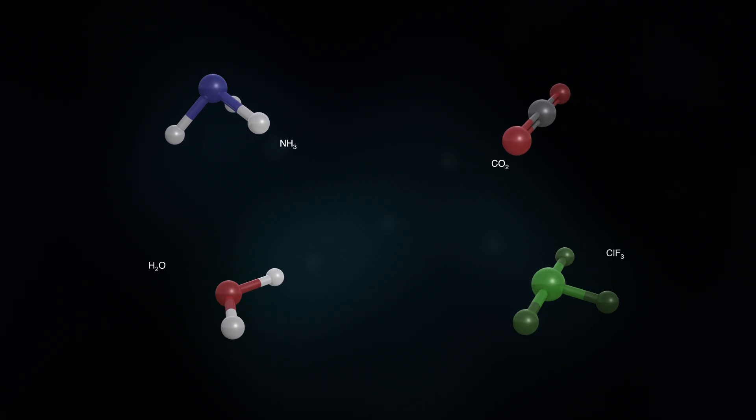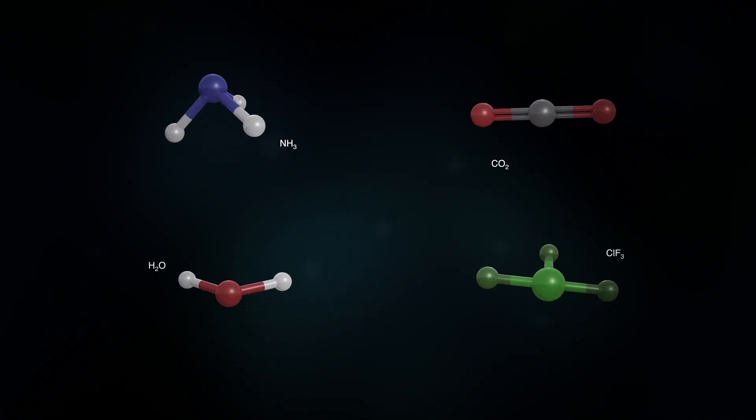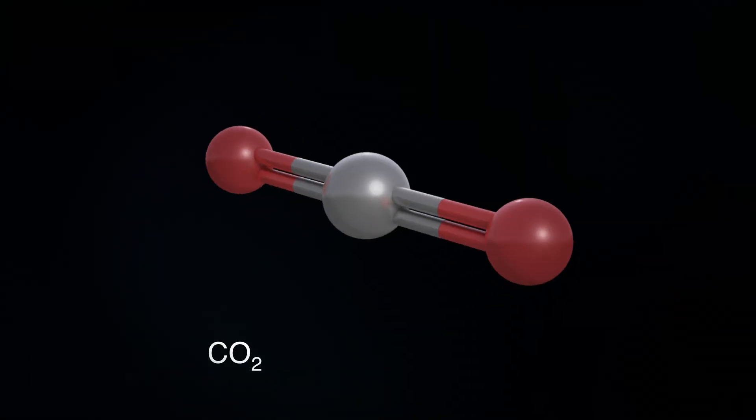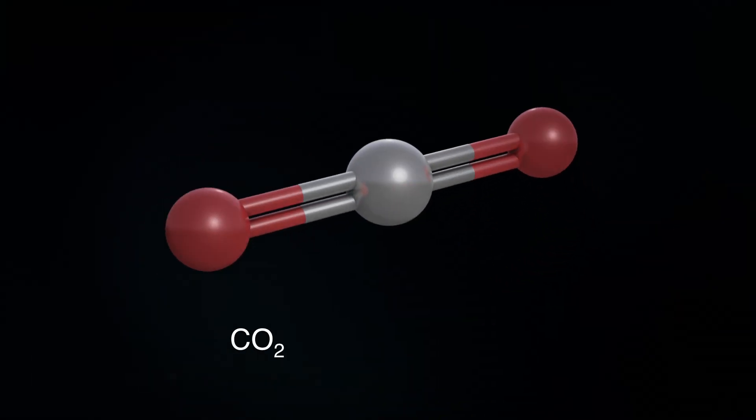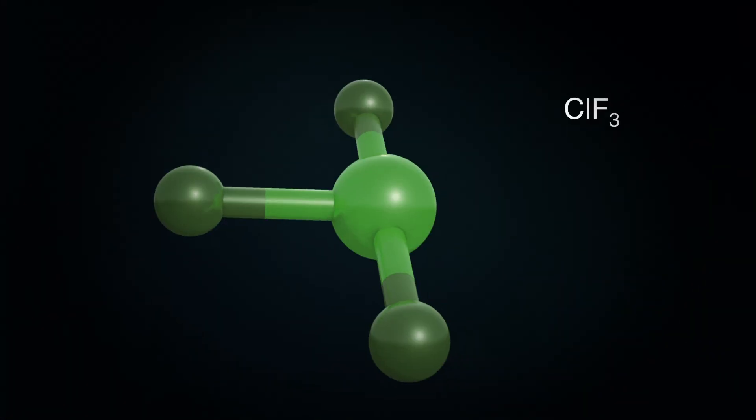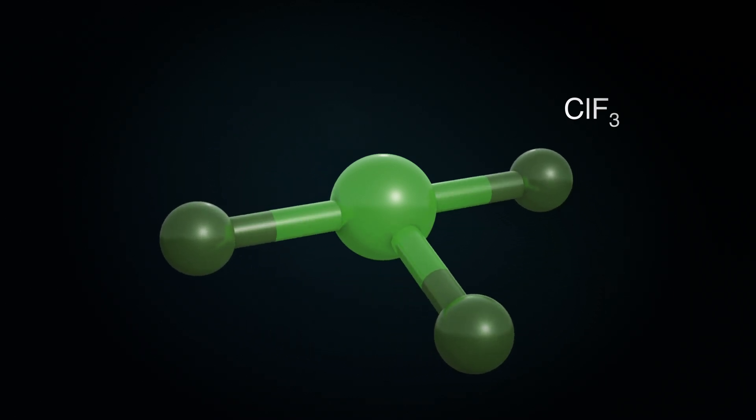Now, depending on the different atoms involved, you can actually get lots of different shapes. Ammonia, or NH3, is shaped like a pyramid. Carbon dioxide, or CO2, is a straight line. Water, H2O, is bent, like your elbow would be bent. And chlorine trifluoride, or CLF3, is shaped like the letter T.